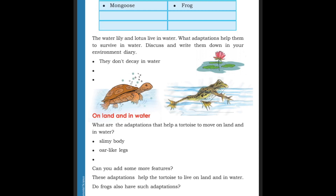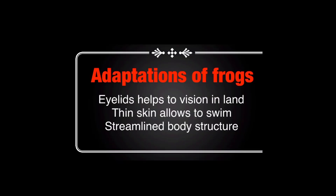Do frogs also have such adaptations? Let us check the adaptations of frogs. I have listed three adaptations. First, eyelids help vision on land. Thin skin allows them to swim. Streamlined body structure — by that, the streamlined body structure helps frogs to survive in water and on land.